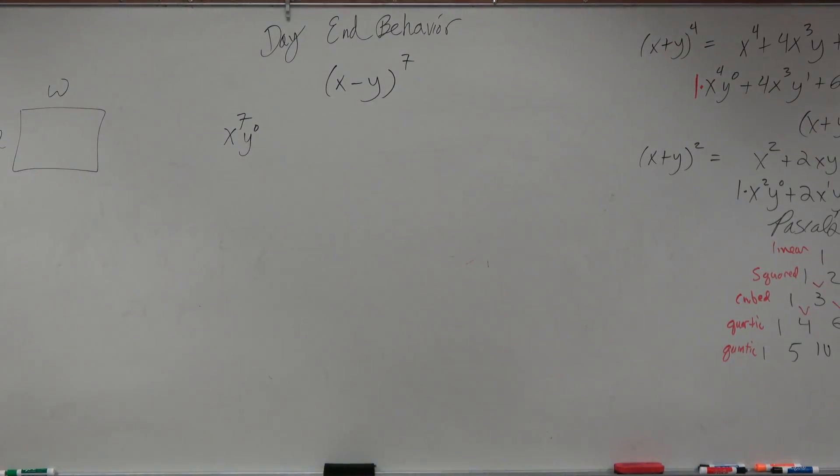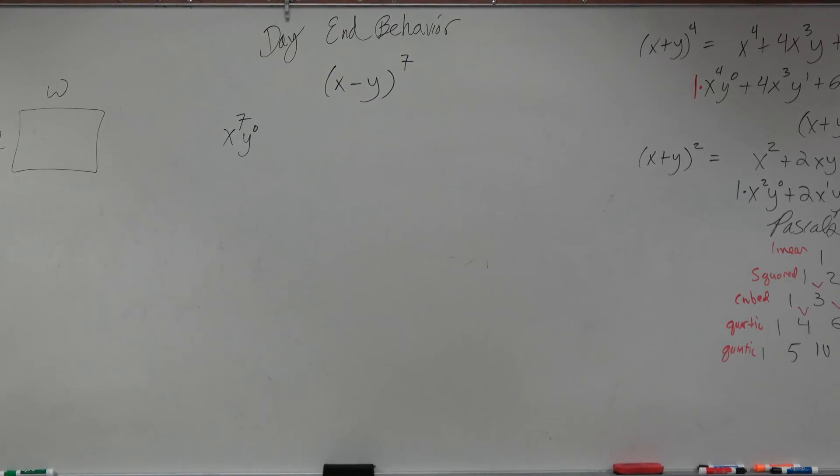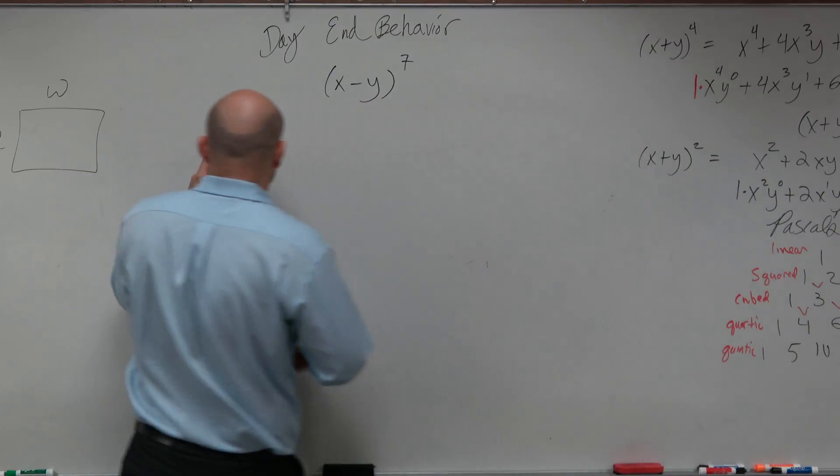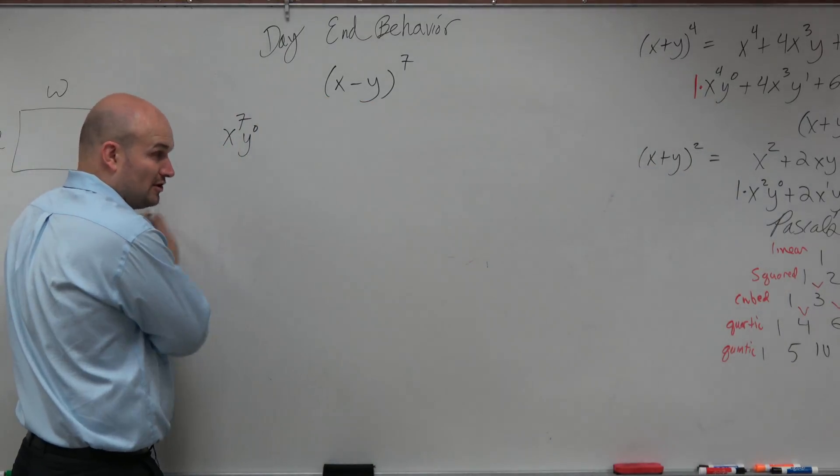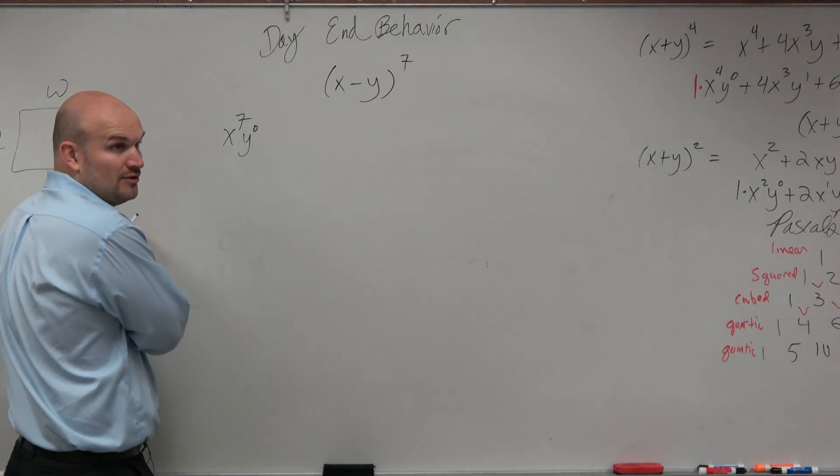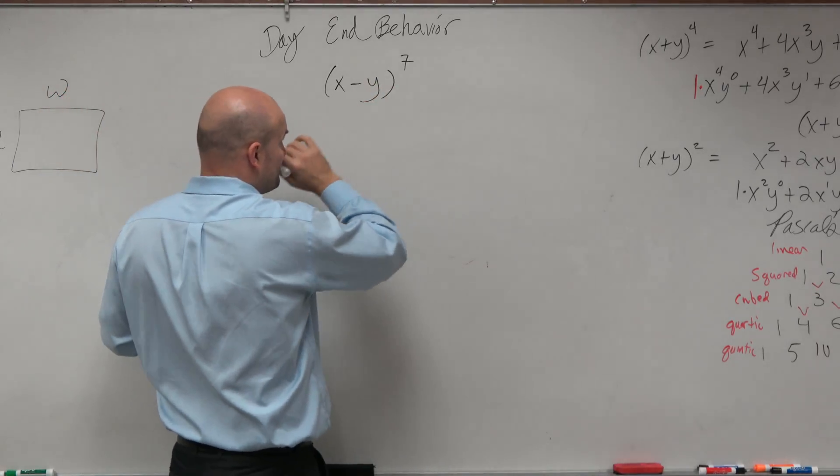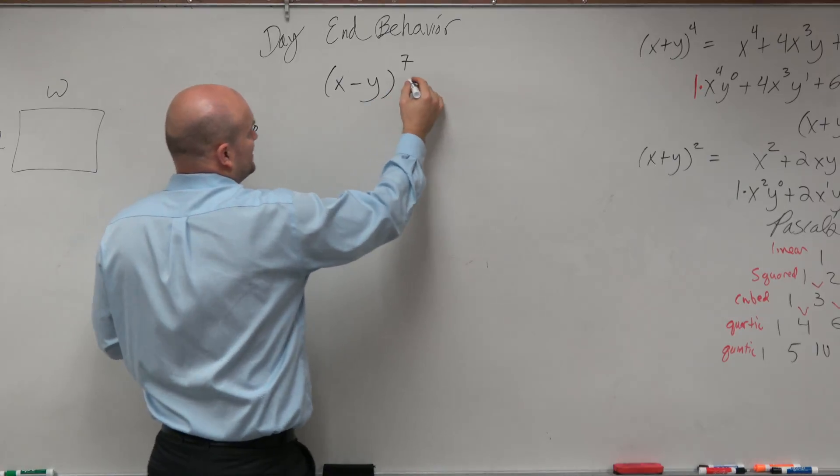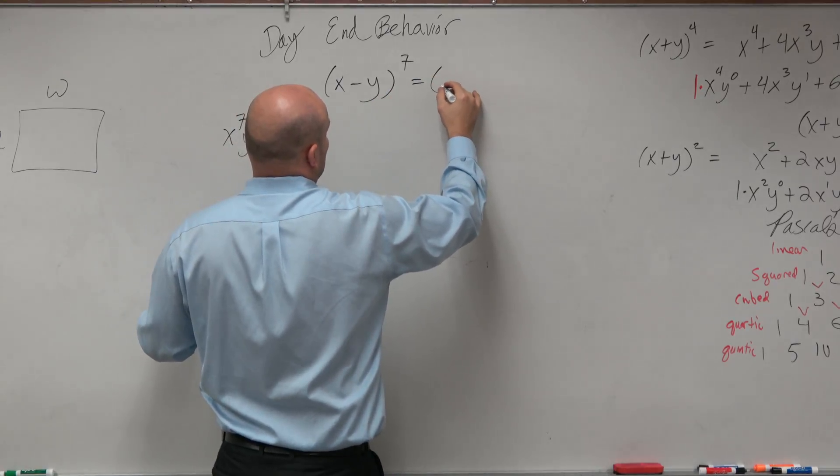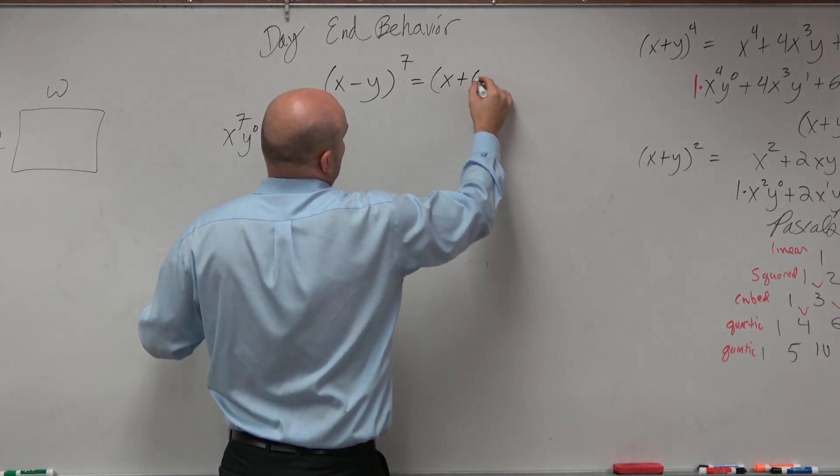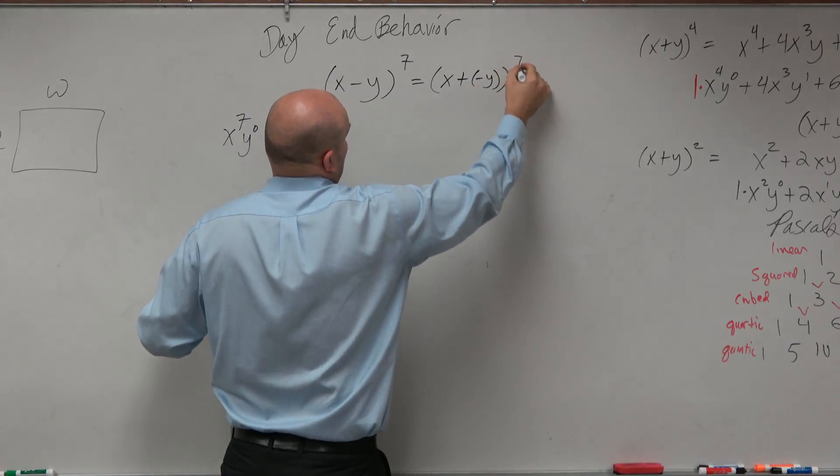Now, basically what I'm going to be doing is going from every single term, and remember what we saw was that the powers, my first term powers go in descending order, and my second term powers go in ascending power. Now, it is also important to recognize that when we're dealing with this, it's probably helpful to recognize this as x plus negative y to the 7th.